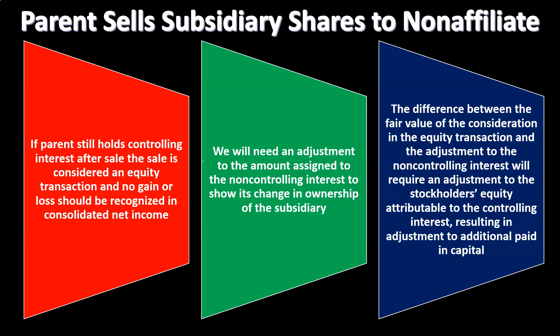The difference between the fair value of the consideration in the equity transaction and the adjustment to the non-controlling interest will require an adjustment to the stockholders' equity attributable to the controlling interest, resulting in an adjustment to additional paid-in capital. This is the most unusual component: if this transaction would normally produce a gain or loss and we are not recording that gain or loss, the adjustment essentially flows to additional paid-in capital.